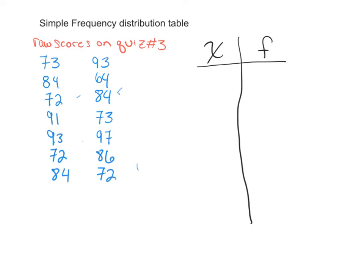There's a couple different types of frequency distribution tables you can do. The first one we're going to talk about is simple frequency distribution table. So what we have over here is raw scores on quiz number three.